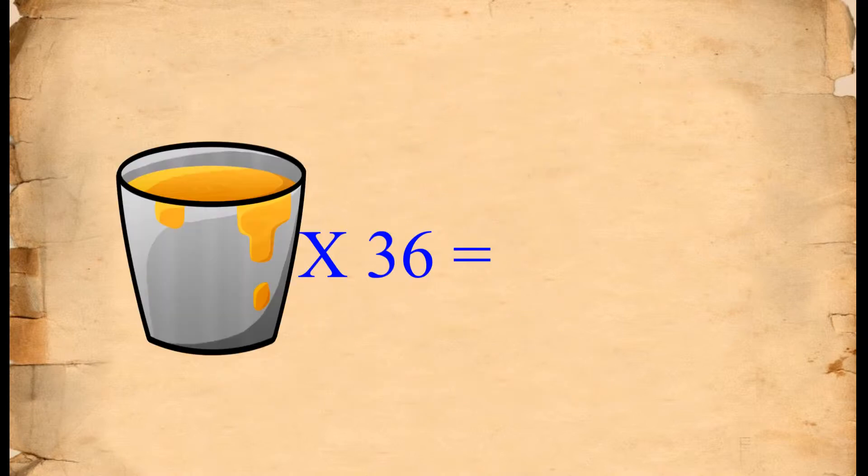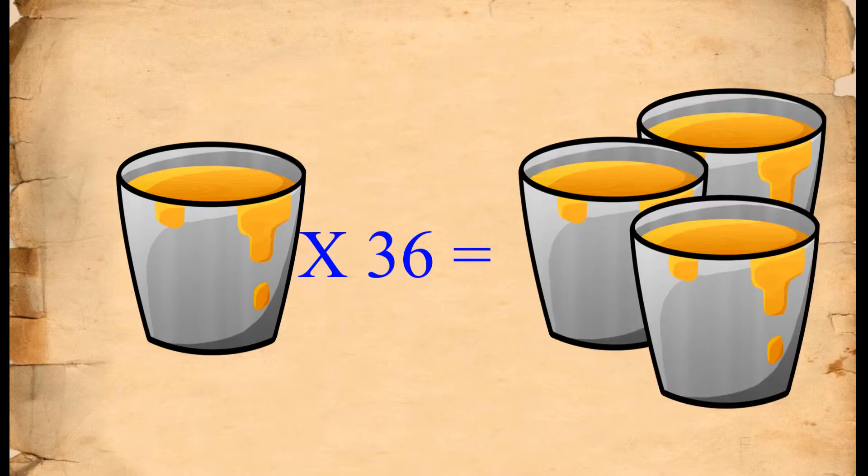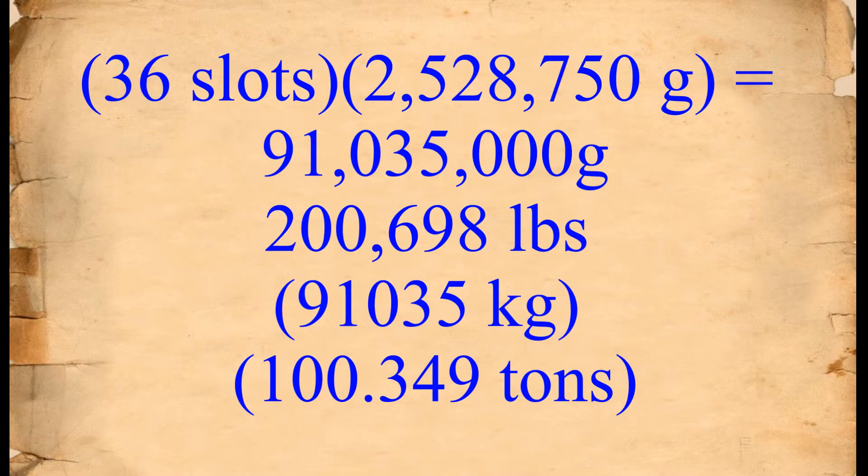We do the same thing for lava and multiply the weight of one lava bucket by 36 and we get 91,035,000 grams or about 200,640 pounds.